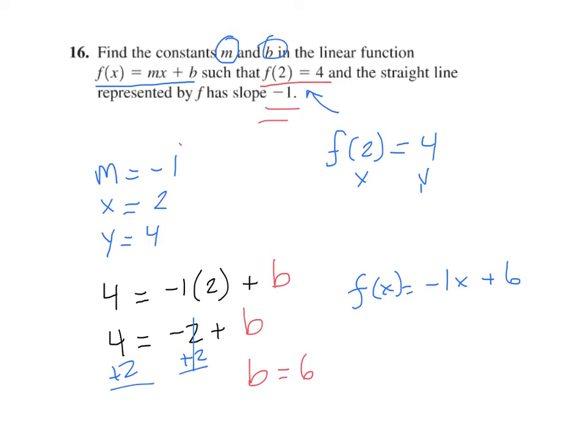So our value of m is negative 1, because that is the slope. And we've solved for b, and we find out b equals 6.